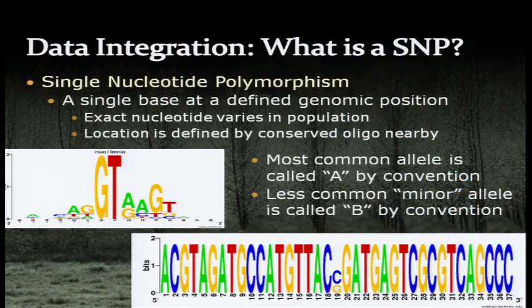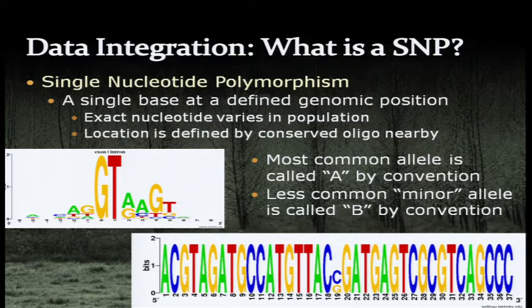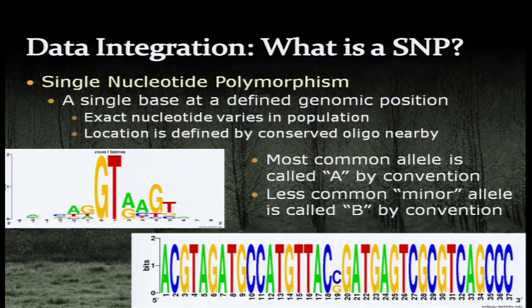A SNP is a single base at a defined genomic position where the exact nucleotide varies in the population, and the location is defined by conserved sequences nearby. In the logo-type display, the height of each position is proportional to conservation. This shows the mammalian splice site where G and T are highly conserved, while in other regions two nucleotides are commonly found. The most common allele is the A or major allele, and the less common is the minor or B allele. A perfect SNP site has lots of highly conserved flanking sequence with exactly two nucleotides at the variable position.